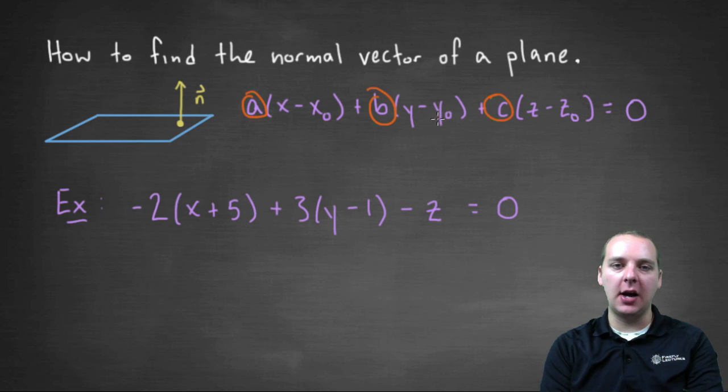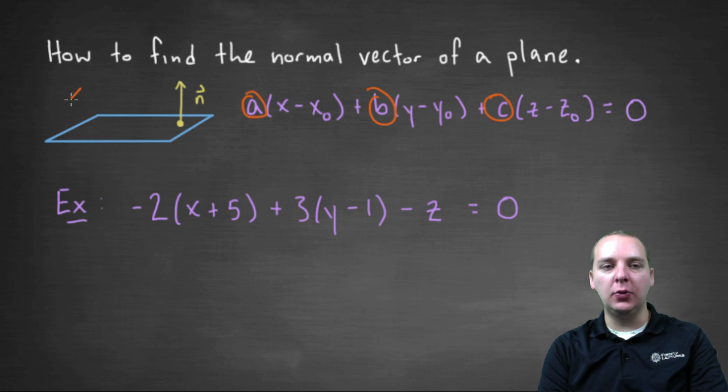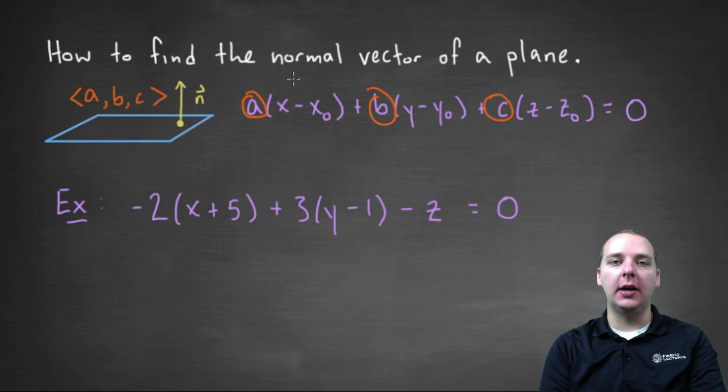the x minus x naught, y minus y naught, and z minus z naught, this ABC is actually your normal vector, or one of the normal vectors to the plane. So if you write that as a vector ABC, that will be one of the vectors that's orthogonal to your plane.